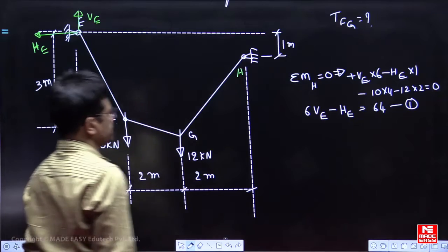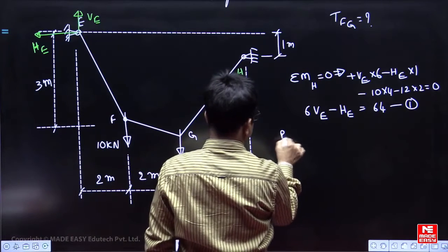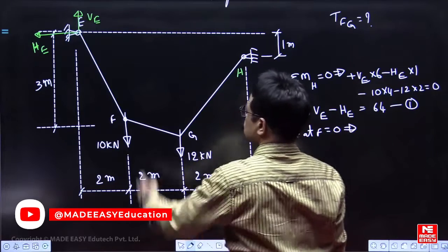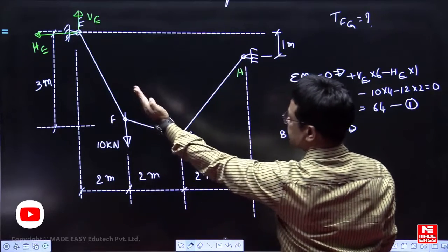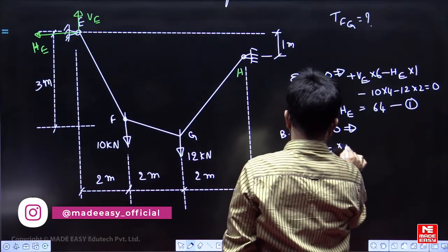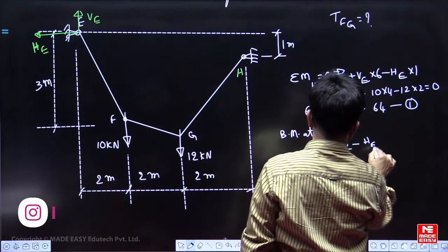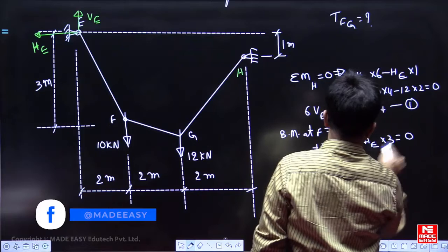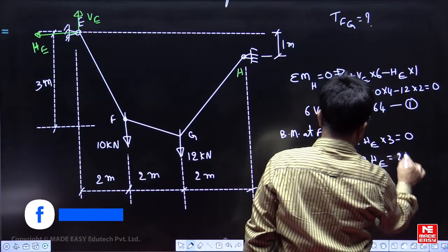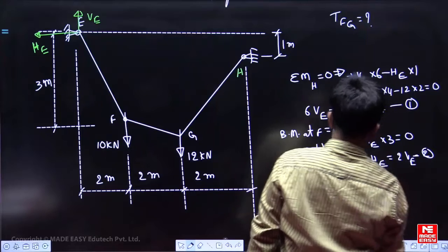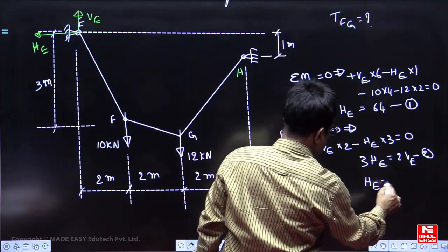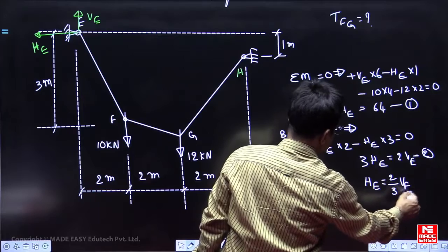Then bending moment at F is also equal to 0. So, stand at F, look left, plus VE into 2 minus HE into 3 is equal to 0. So, you will get 3HE is equal to 2VE. Call it as equation 2. So, HE will get 2/3 times VE.